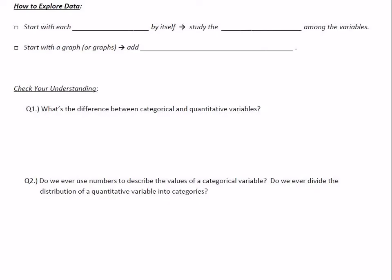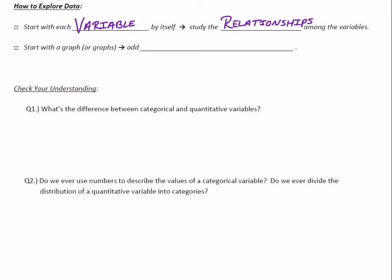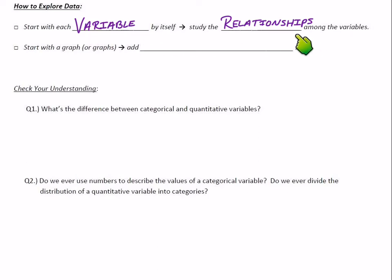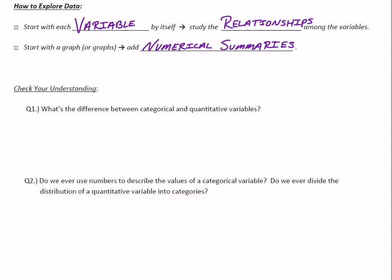To explore data, we start with each variable by itself, then study the relationships among the variables — we might start to see trends among Kentucky residents or among married people. We start with each variable individually and then look at the relationships. We like to display data with graphs first and then add numerical summaries, because as human beings we're very visual creatures.